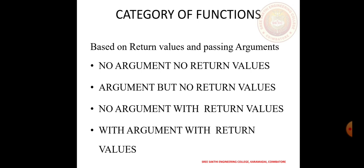The next very important thing is the category of a function. There are four important categories: one is no argument no return value, two is argument but no return value, three is no argument with return value, and four is with argument with return value. These are the four important categories in a function.